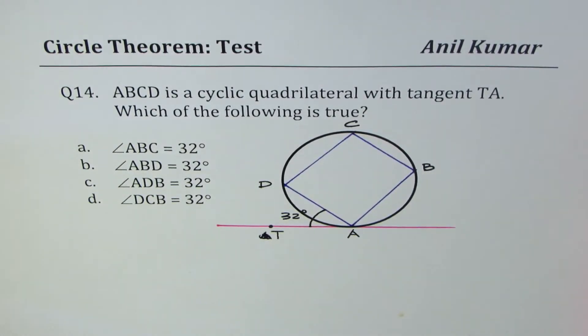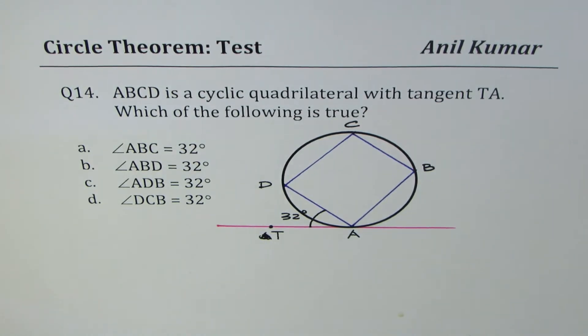I'm Anil Kumar sharing with you a multiple choice question based on circle theorem. Question number 14. ABCD is a cyclic quadrilateral with tangent TA. Which of the following is true?